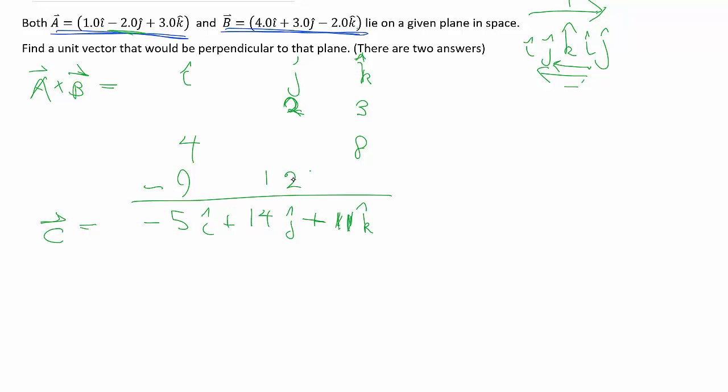So this vector C is going to be negative 5I plus 14J plus 11K hat. But specifically, we don't want any vector, we want a unit vector. So to get the unit vector C hat, we just take the vector and we divide by the magnitude of the vector. Let's work out the magnitude. The magnitude of the vector is, I'm not going to write these out, but you get the idea. Take each of the components, square it, square root.